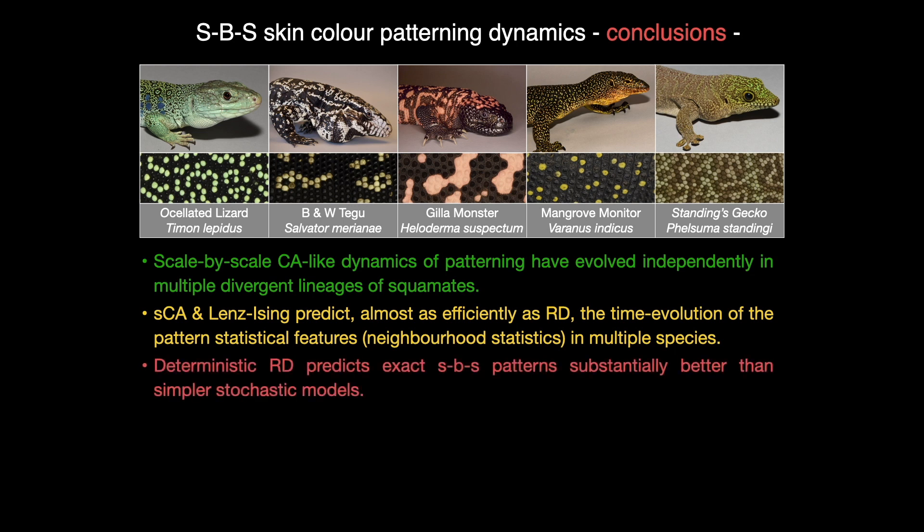Third, deterministic reaction diffusion predicts exact scale-by-scale patterns substantially better than simpler stochastic models. This is due to the intrinsic properties of reaction diffusion discussed in the original article.